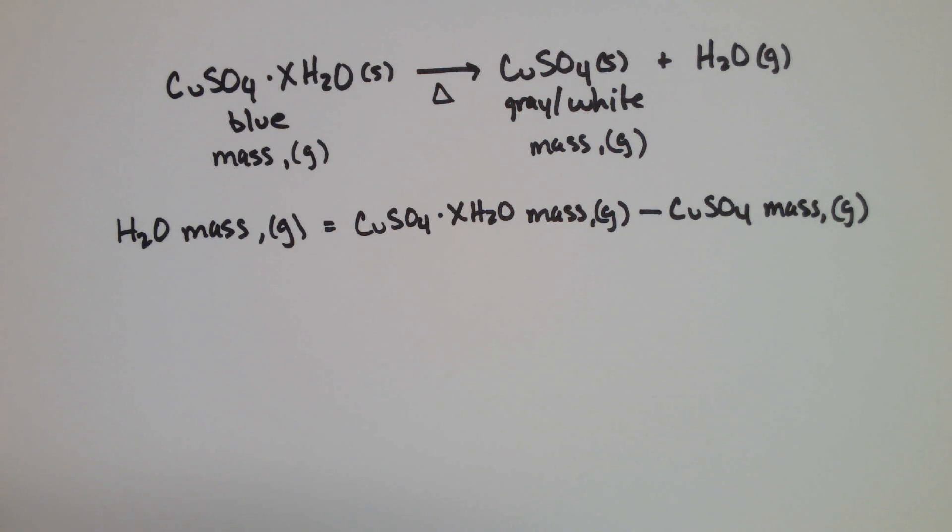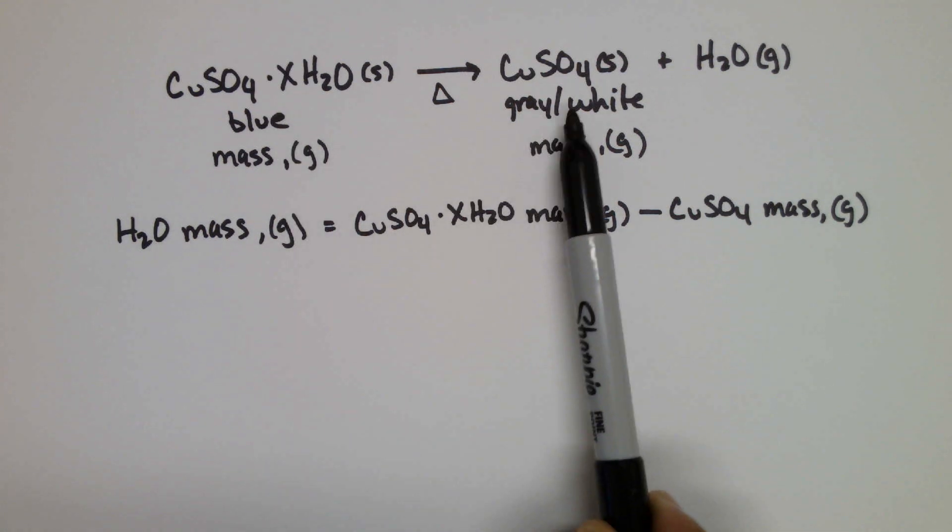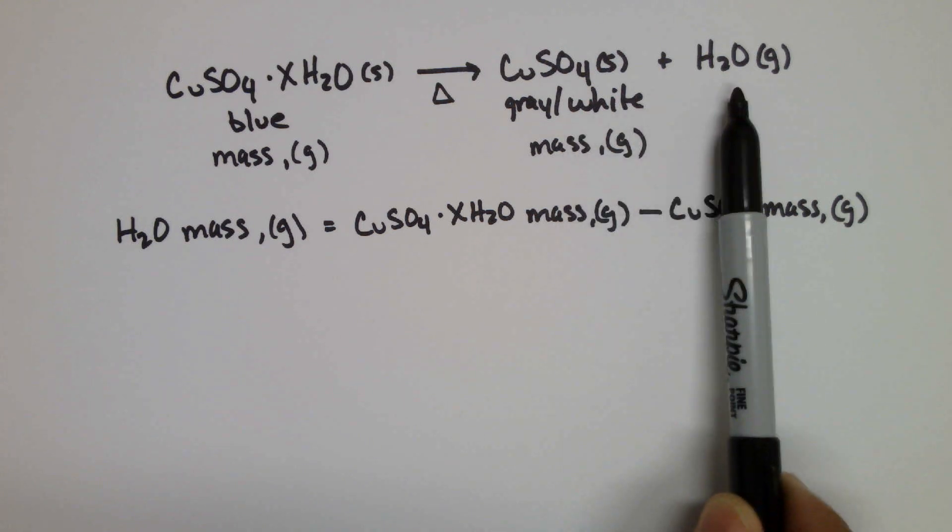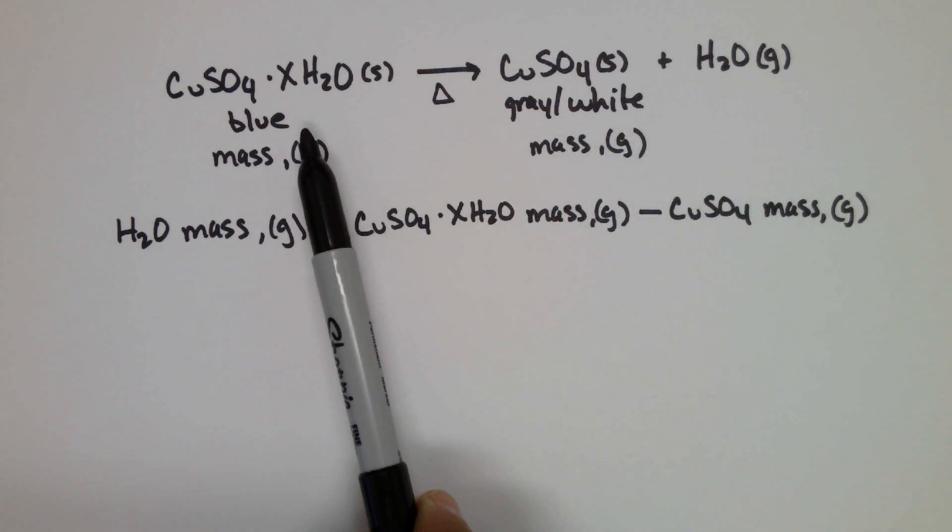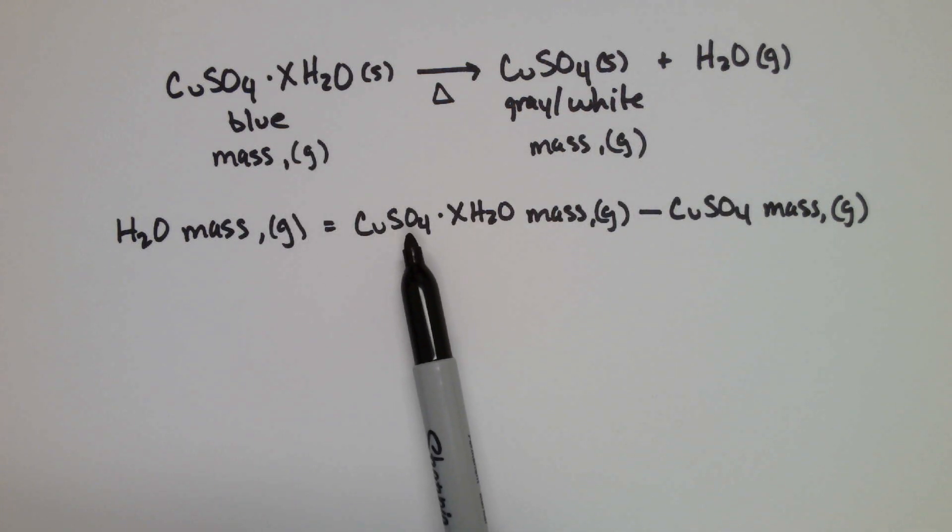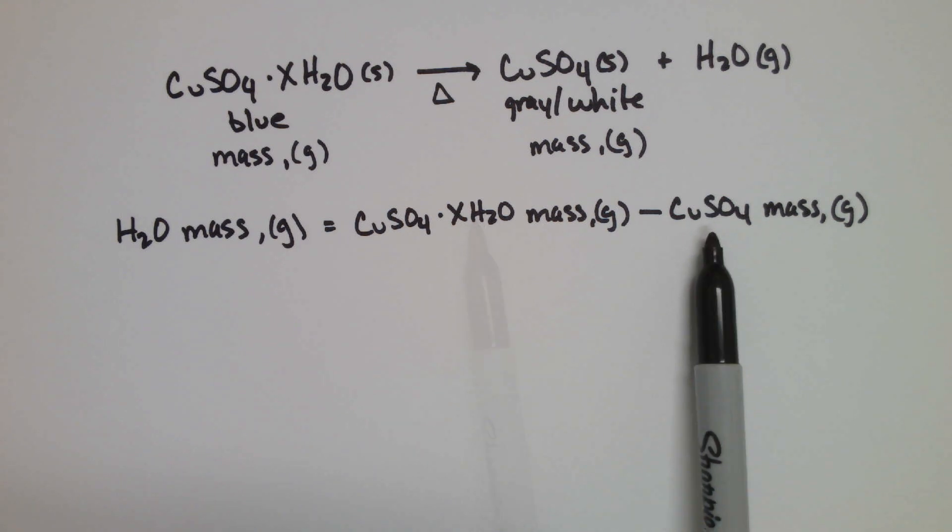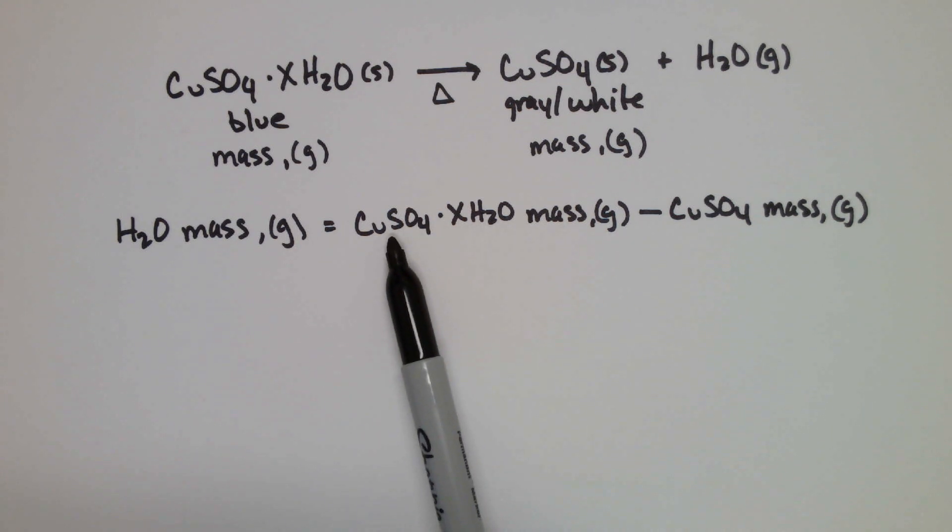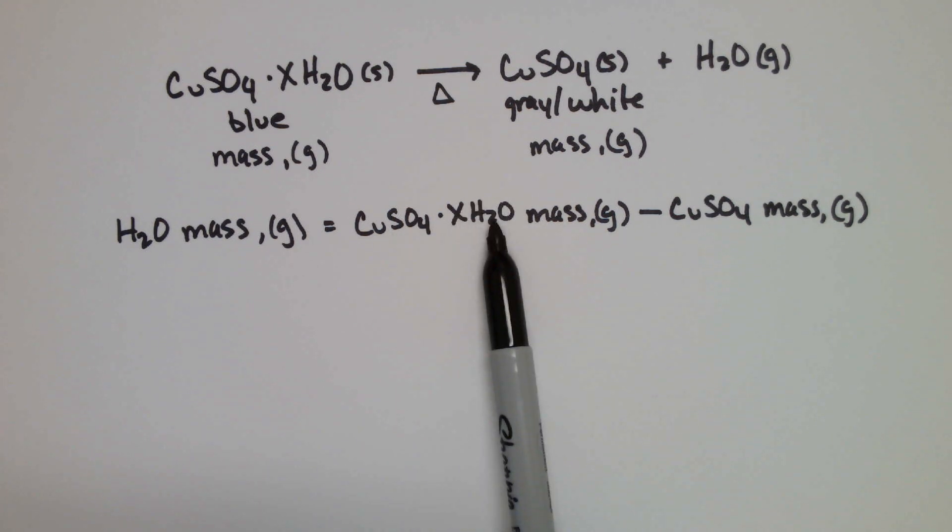As you can imagine, we have the mass of the copper sulfate and we can find the mass of water. We'll take the original mass of the hydrate and then subtract the mass of the copper sulfate, and what's left over is the mass of water.